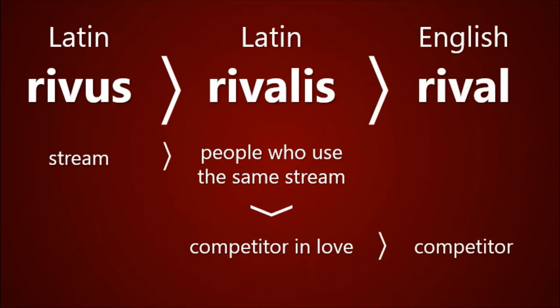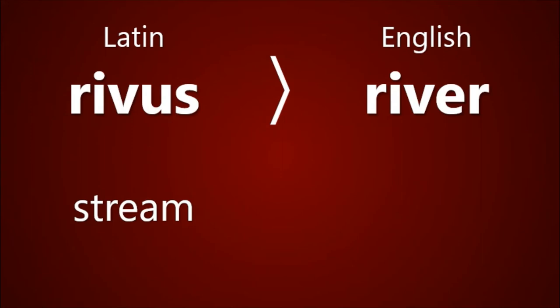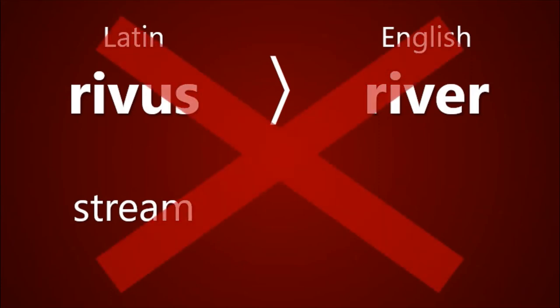If you've watched many of my videos before, you might expect that now is the point where I show you how the word rival is distantly related to another English word you'd never expect. We've traced rival all the way back to the Latin word rivus, meaning stream. It's tempting to assume that rivus gave us the English word river – the words look similar, they sound similar, and their meaning is almost identical. But actually, river doesn't come from rivus at all. It comes from another Latin word, which also gives us the word arrive. But that's a topic for another video.